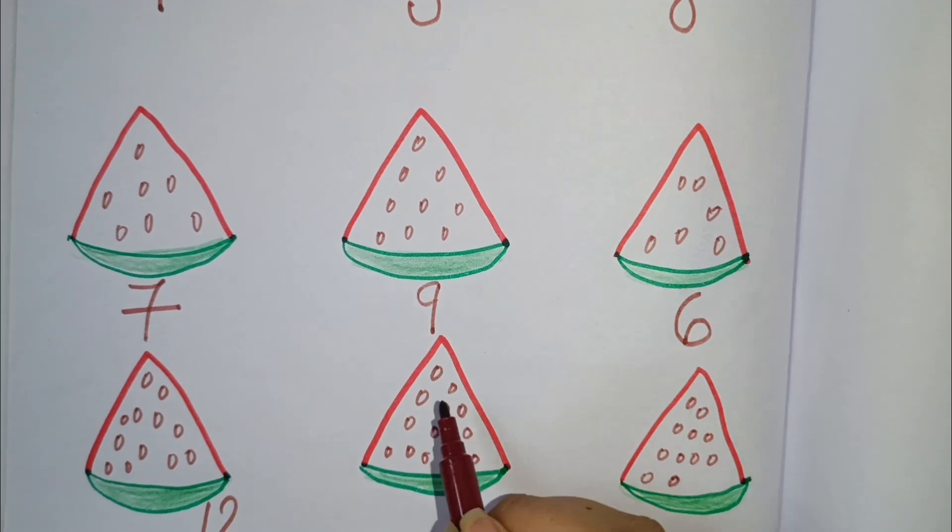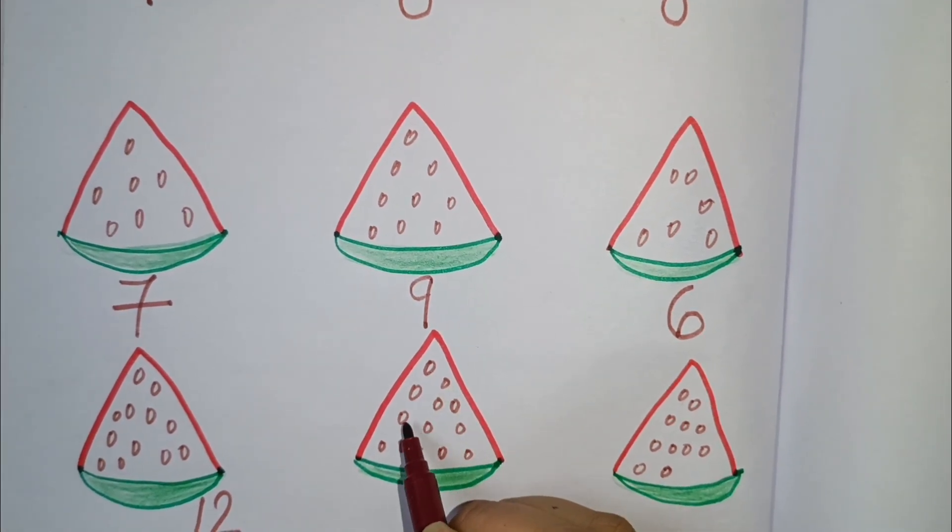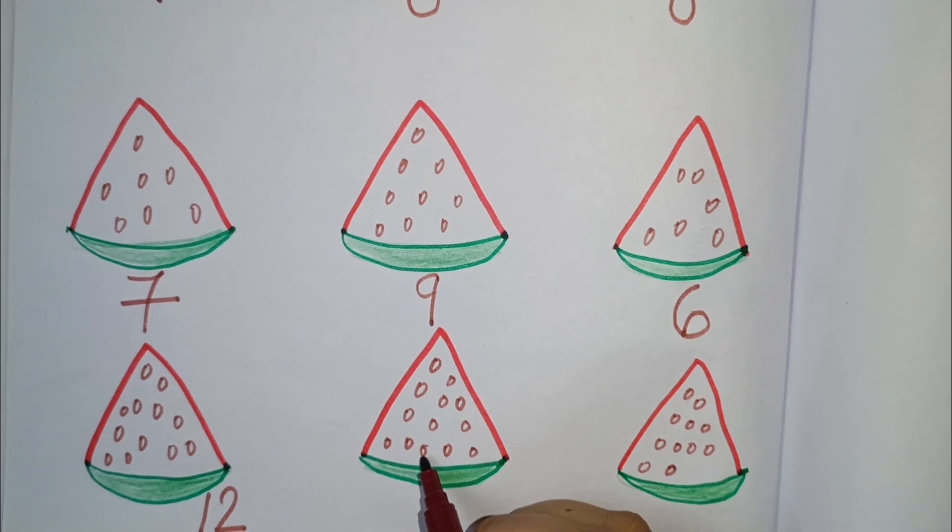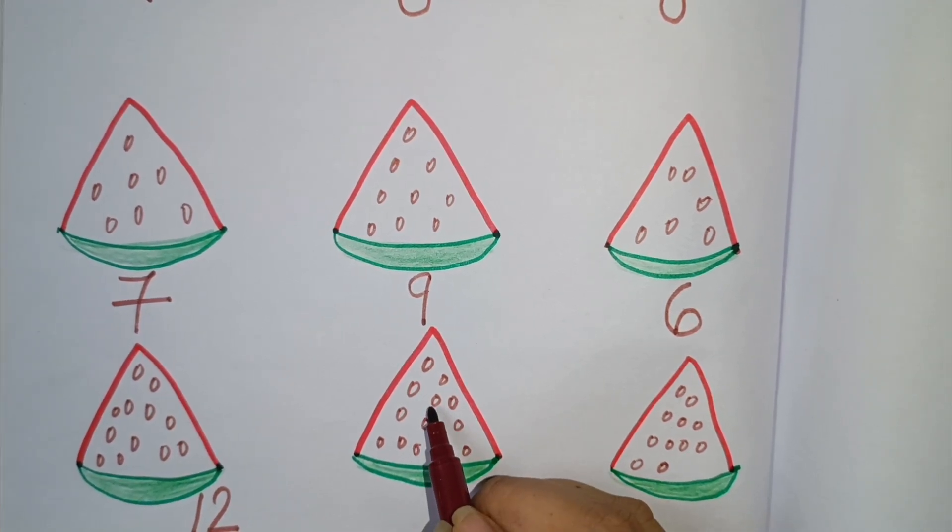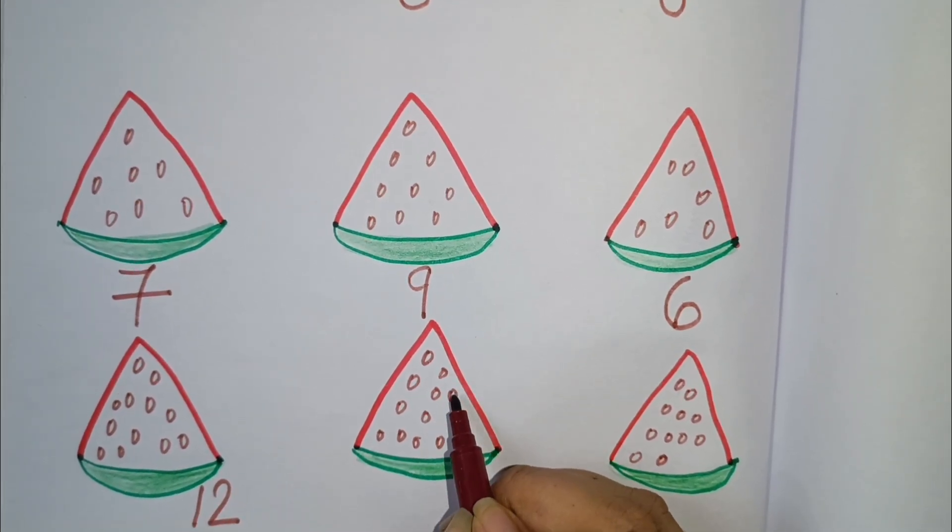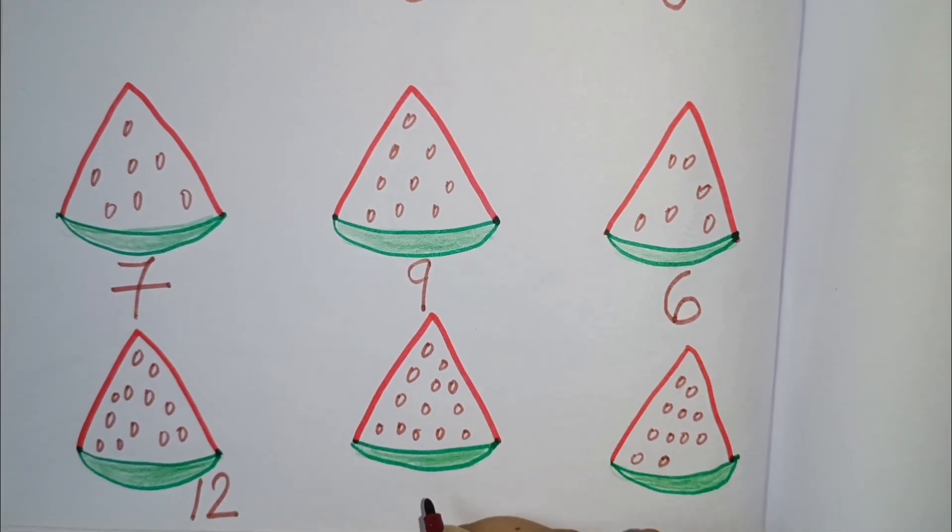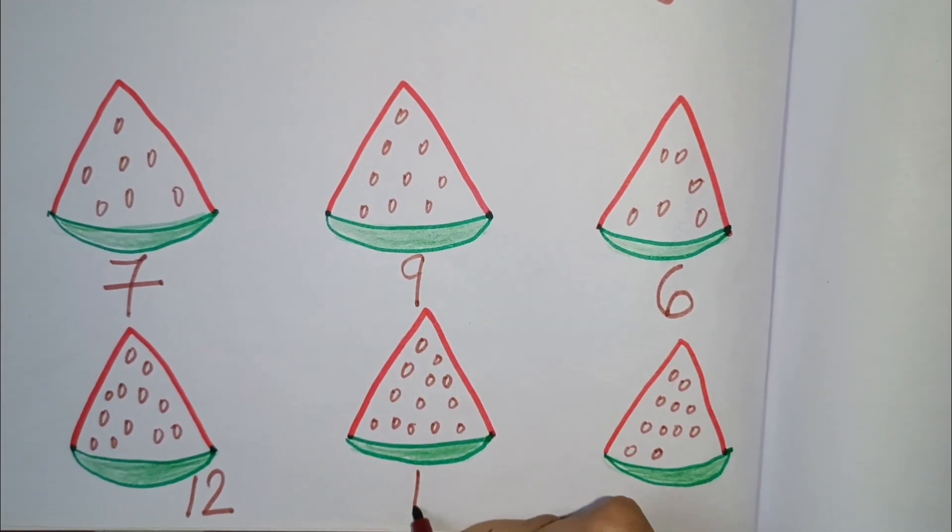Next is 1, 2, 3, 4, 5, 6, 7, 8, 9, 10, 11, 12, 13. This watermelon contains 13 seeds.